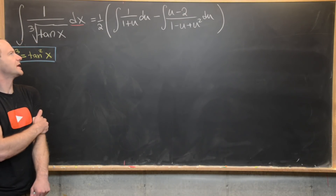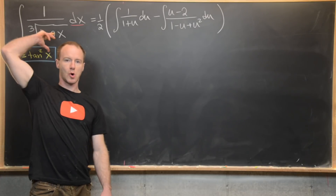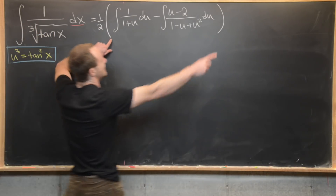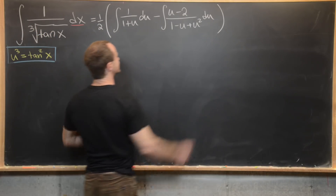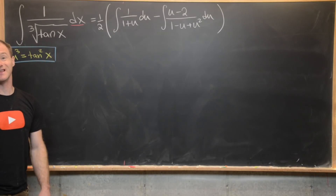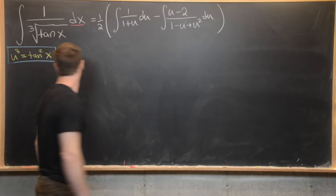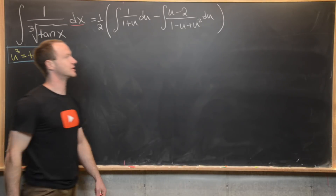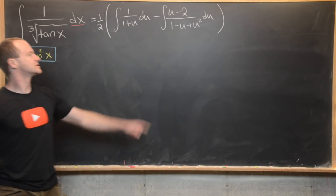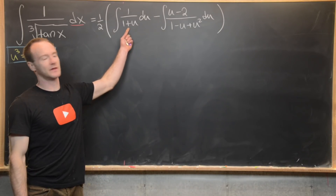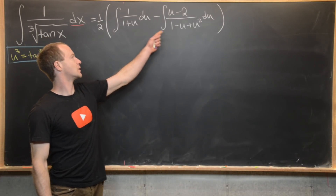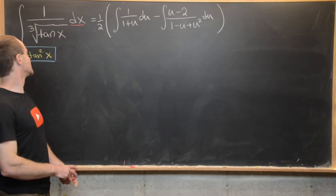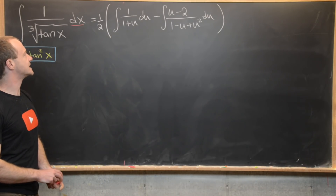So our goal integral equals one half times the difference of these two integrals in the u domain, keeping in mind the original substitution u cubed equals tangent squared of x. The first integral has a fairly simple antiderivative, so we just need to worry about the second one.